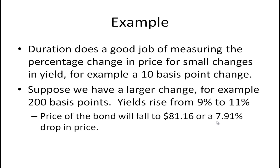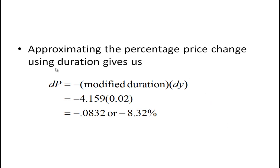That's a drop in price of 7.91%, which you can work out using a financial calculator or Excel. Now if you only use modified duration to figure out the percentage change, the formula says the change in price equals minus modified duration times the change in yield. The change in yield is 200 basis points or 0.02, so it's minus 4.159 times 0.02, giving minus 0.0832, or a negative 8.32% change in the bond's price.